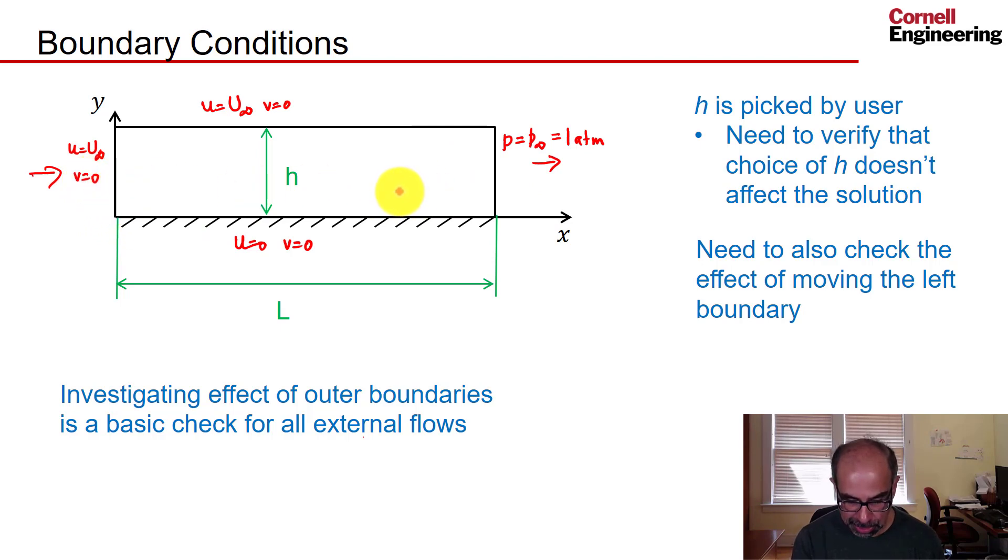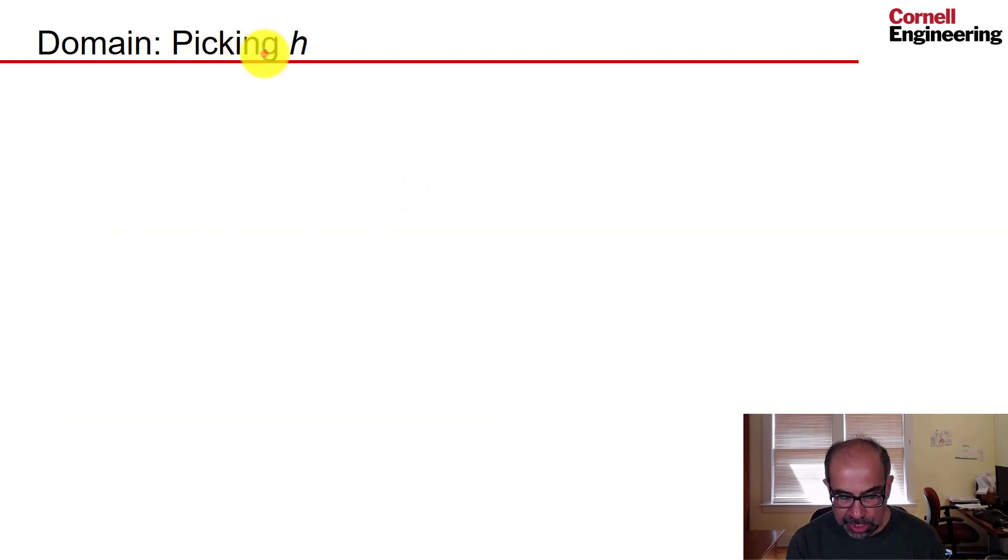What's the value of h we should pick? For that, what I did was I went to boundary layer theory and I said I can determine what the thickness is, or estimate what the thickness of the boundary layer is at x equal to L. That's denoted as delta 99%, so at the edge of that boundary layer the velocity has become 99% of the free stream value.